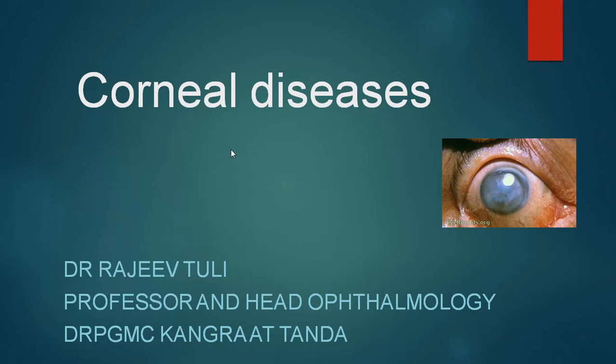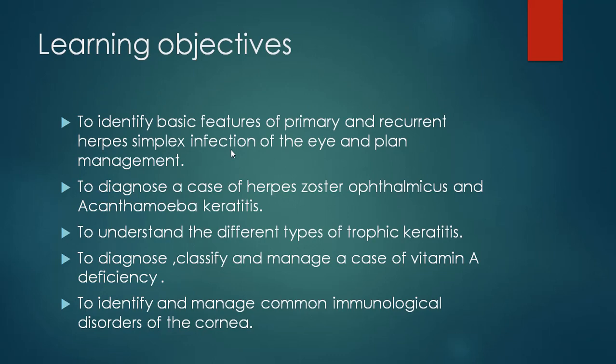The learning objectives of this session would be to identify basic features of primary and recurrent herpes simplex infection of the eye and plan management, to diagnose a case of herpes zoster ophthalmicus and acanthamoeba keratitis, to understand the different types of trophic keratitis, to diagnose, classify and manage a case of vitamin A deficiency, and to identify and manage common immunological disorders of the cornea.